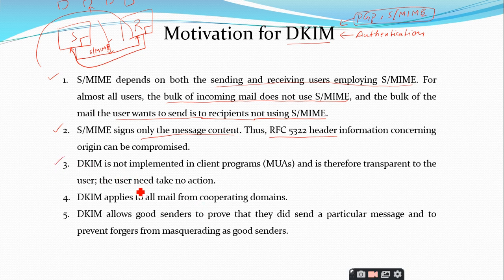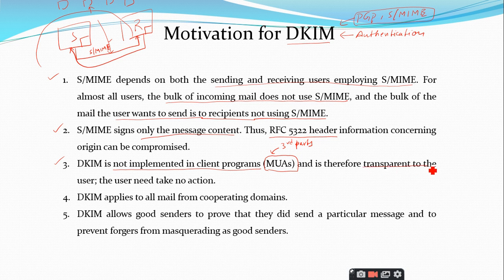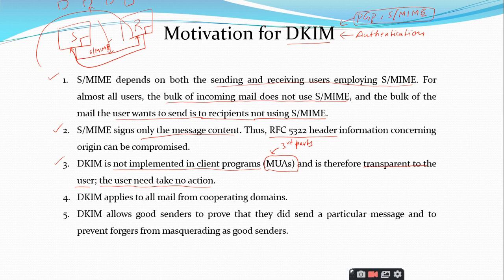The third point is that DKIM is not implemented in client programs — Message User Agents — so it is treated as a third party, and therefore it is transparent to the user. The user needs to take no action; the user simply types their content and submits it to the ADMD. The ADMD takes the responsibility of signing the document — both the entire content and the header information — the ADMD adds the header and signs both.